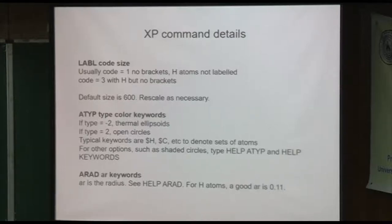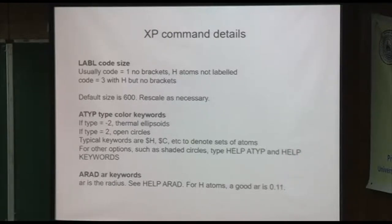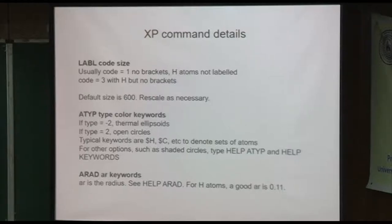Coming back to the label command, there are just four possibilities: with brackets or without brackets, with hydrogen or without hydrogen — four permutations. Code 1 is no brackets and no hydrogens being labeled, which is the most common one. The size default is 600, but I rarely use 600 — maybe 500 or 525, something in that range. You have to play around with it. If the label size isn't satisfactory, you can usually edit it later.